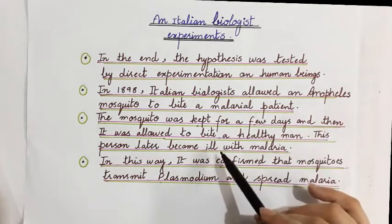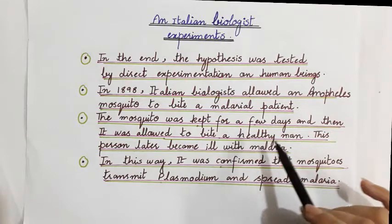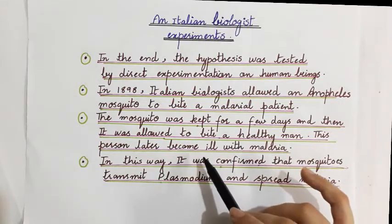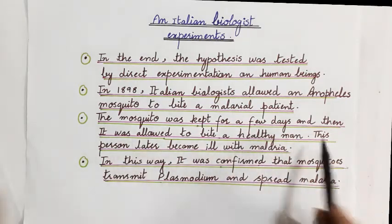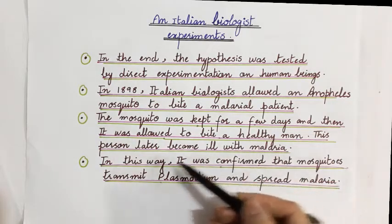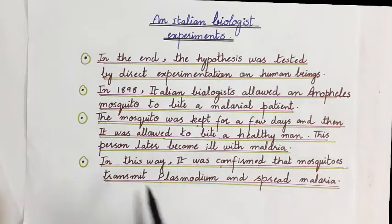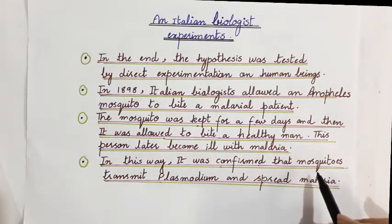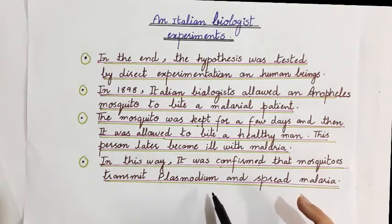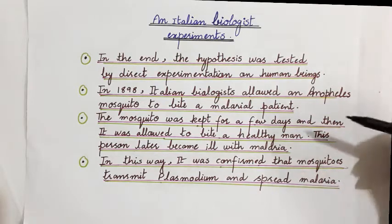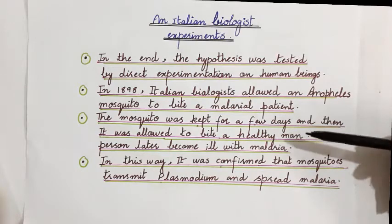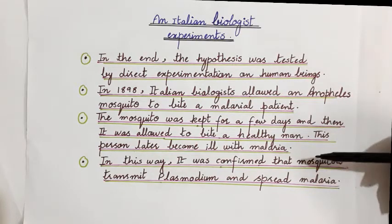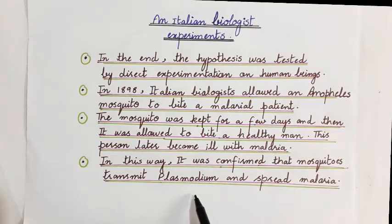The Italian biologist then allowed the infected mosquito to bite a healthy man. This person later became ill with malaria. It was thus confirmed that when an infected mosquito bites a healthy man, malaria is transmitted. In this way, it was confirmed that mosquitoes transmit plasmodium and spread malaria. The experiments of Ronald Ross and the Italian biologist together confirmed that mosquitoes transmit plasmodium and spread malaria.